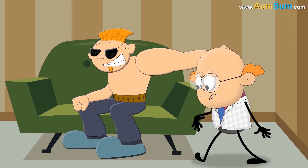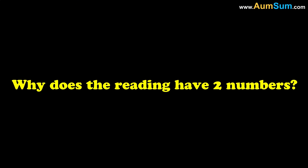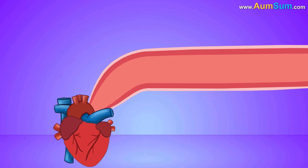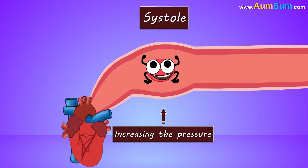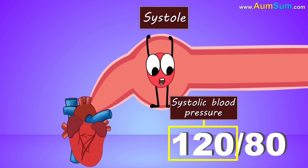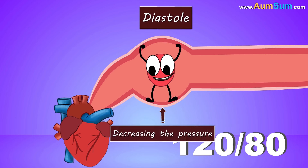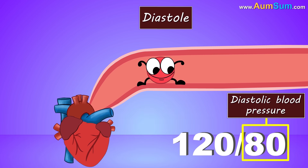The ideal blood pressure reading is about 120 over 80 millimeters of mercury, or slightly below it. But why does the reading have two numbers? It is because our heart is constantly contracting and relaxing. During a phase called systole, our heart contracts to push blood through arteries, increasing the pressure — so the bigger number indicates the systolic blood pressure. Whereas during diastole, our heart relaxes, decreasing the pressure — so the smaller number indicates the diastolic blood pressure.